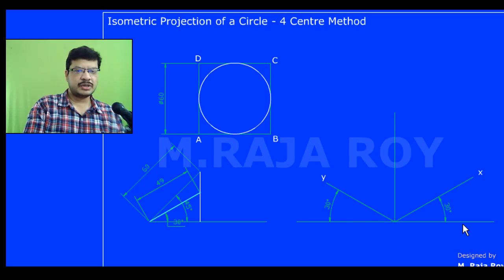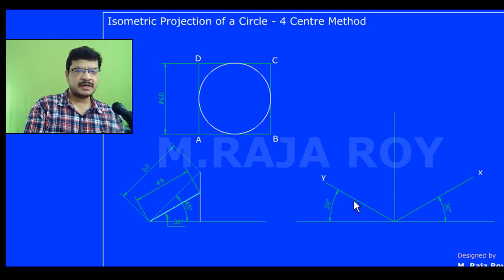Now this is the isometric length. Reference axes are drawn here. This is the horizontal line. With respect to horizontal, if you draw a 30-degree line as shown here, this is the X axis. This vertical line represents the Z axis. This 30-degree line represents the Y axis. Now I am going to draw the isometric projection in the X and Z plane.